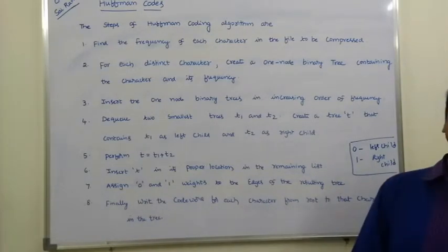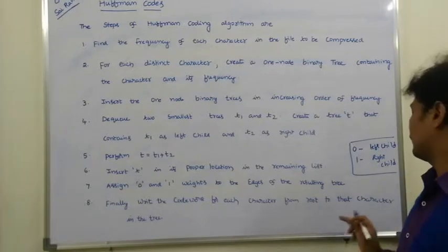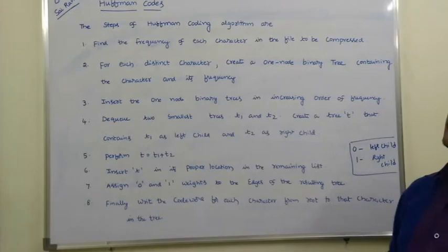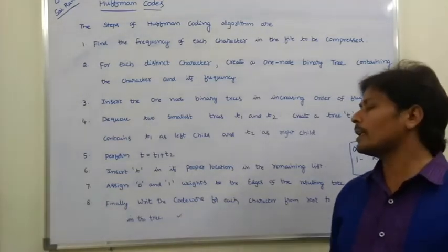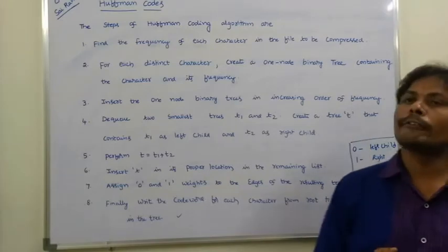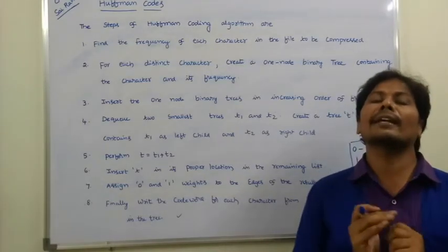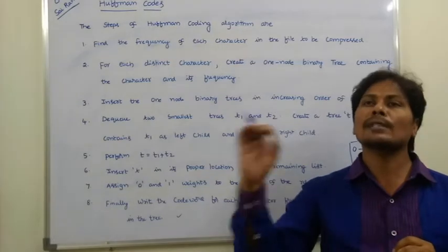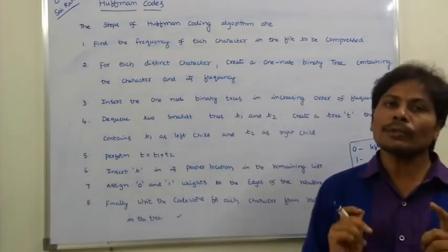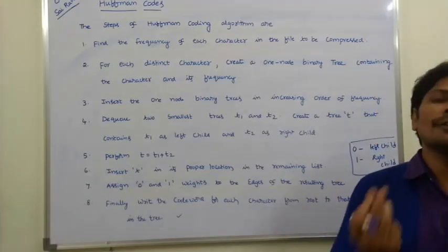Finally, write the code word for each character by traversing from the root to that character's leaf node. After completing all these steps, each character in the given file will have a unique code word. This is the final step of the Huffman coding algorithm.